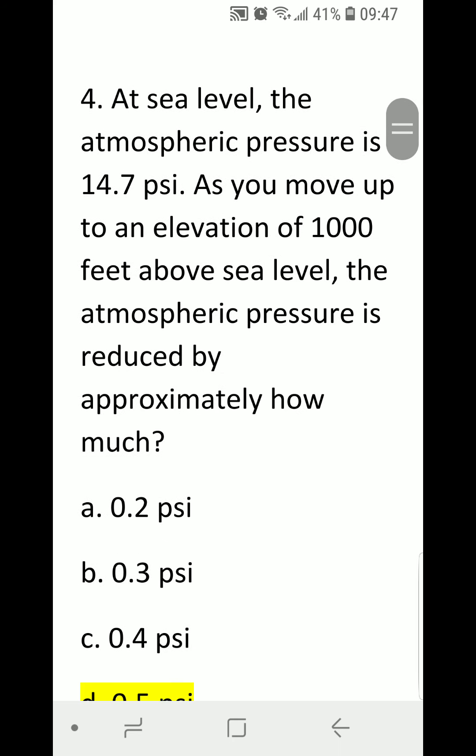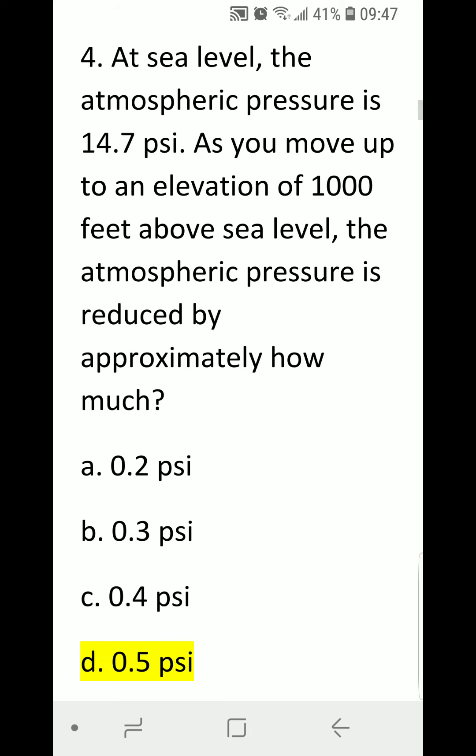Number four: At sea level, the atmospheric pressure is 14.7 PSI. As you move up to an elevation of 1,000 feet above sea level, the atmospheric pressure is reduced by approximately how much? A) 0.2 PSI, B) 0.3 PSI, C) 0.4 PSI, or D) 0.5 PSI. The correct answer is D, 0.5 PSI.